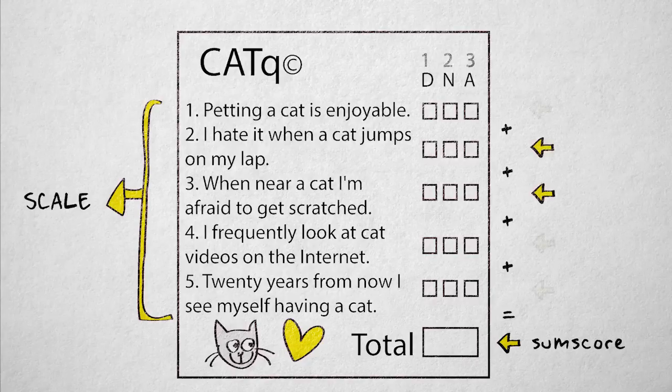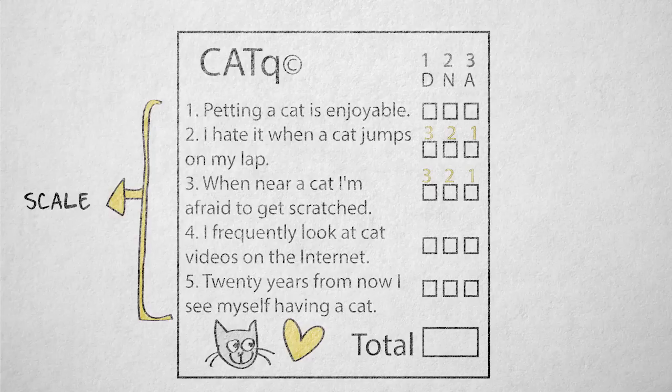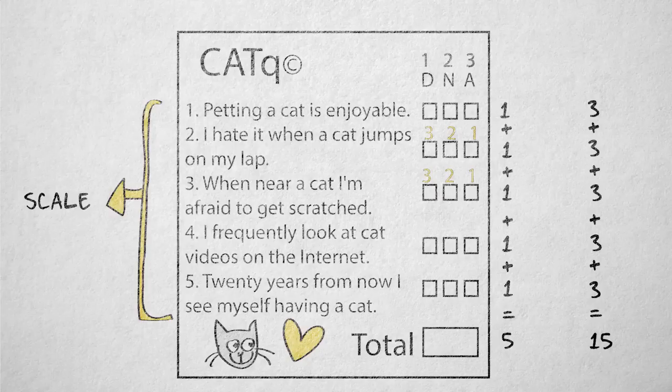The items that are negatively worded, items two and three, need to be recoded. Disagreement should be coded as three, and agreement as one. After recoding, adding the item scores results in a possible scale score between five and fifteen. A higher sum score means someone is more of a cat person.